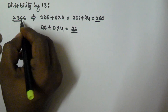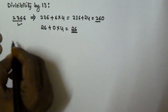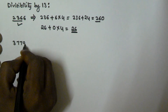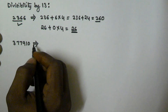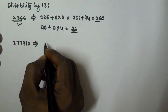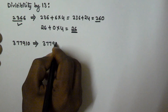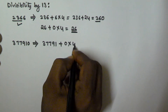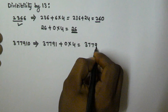Let us see another example: 377910. We have to find whether this number is divisible by 13 or not. We take all the digits except the unit digit — that is 37791 — plus the unit digit 0 times 4, which gives us 37791 again.